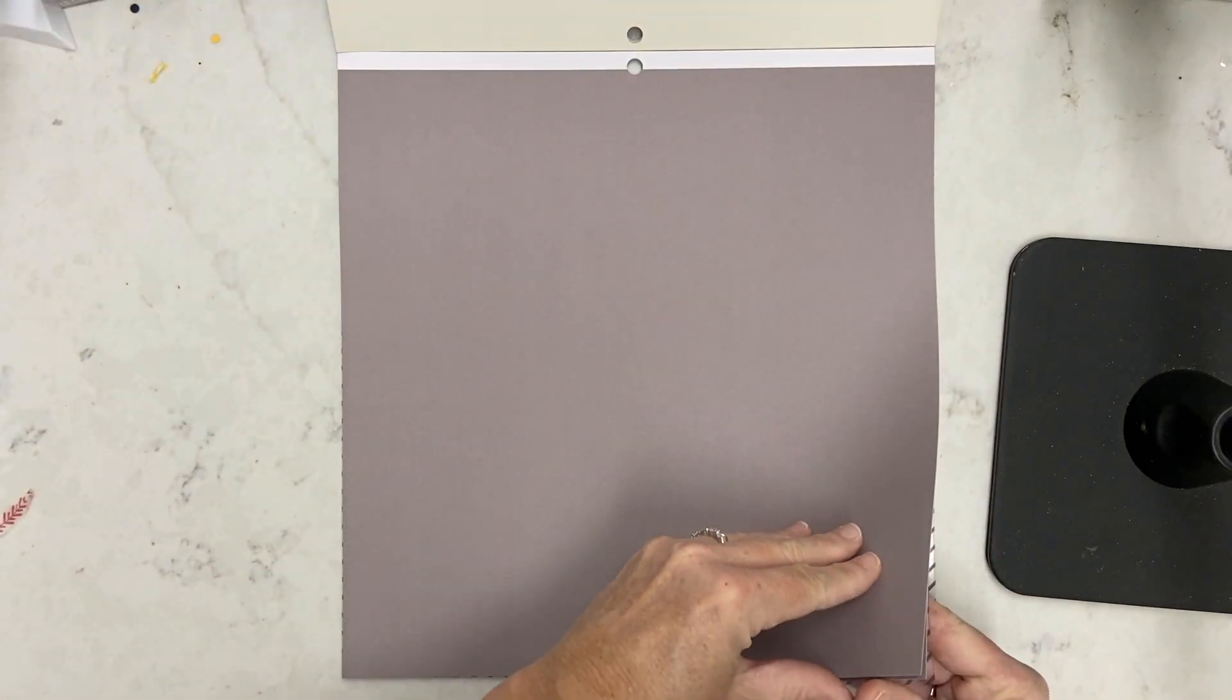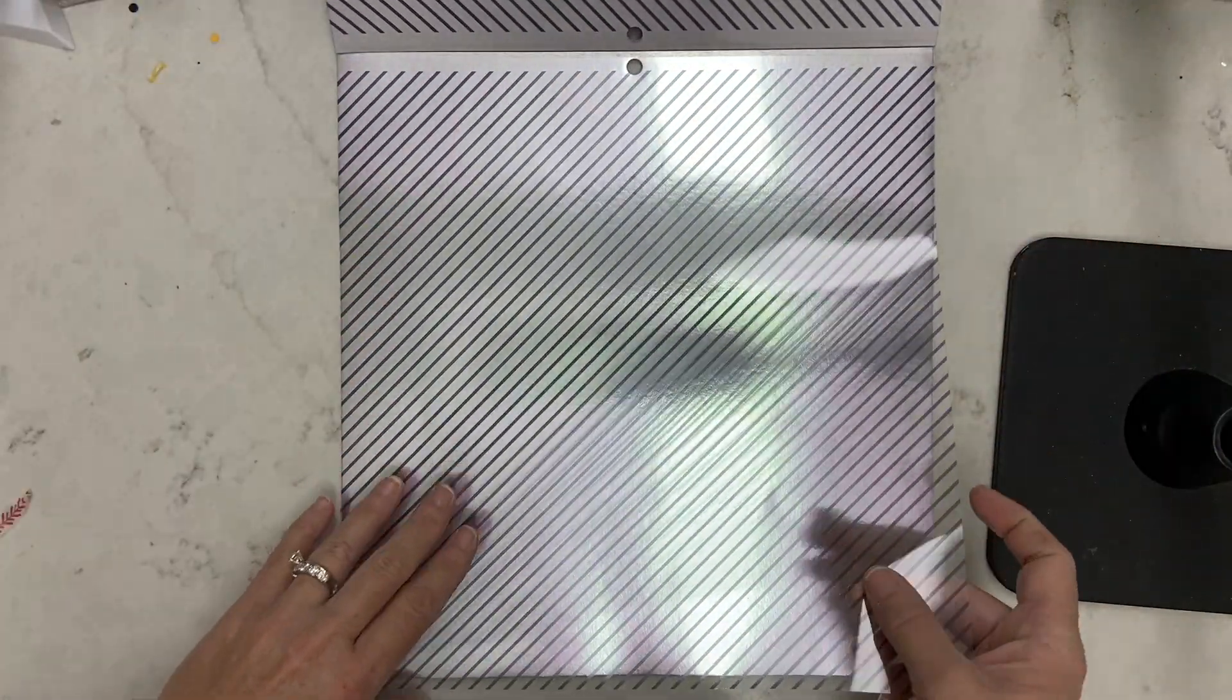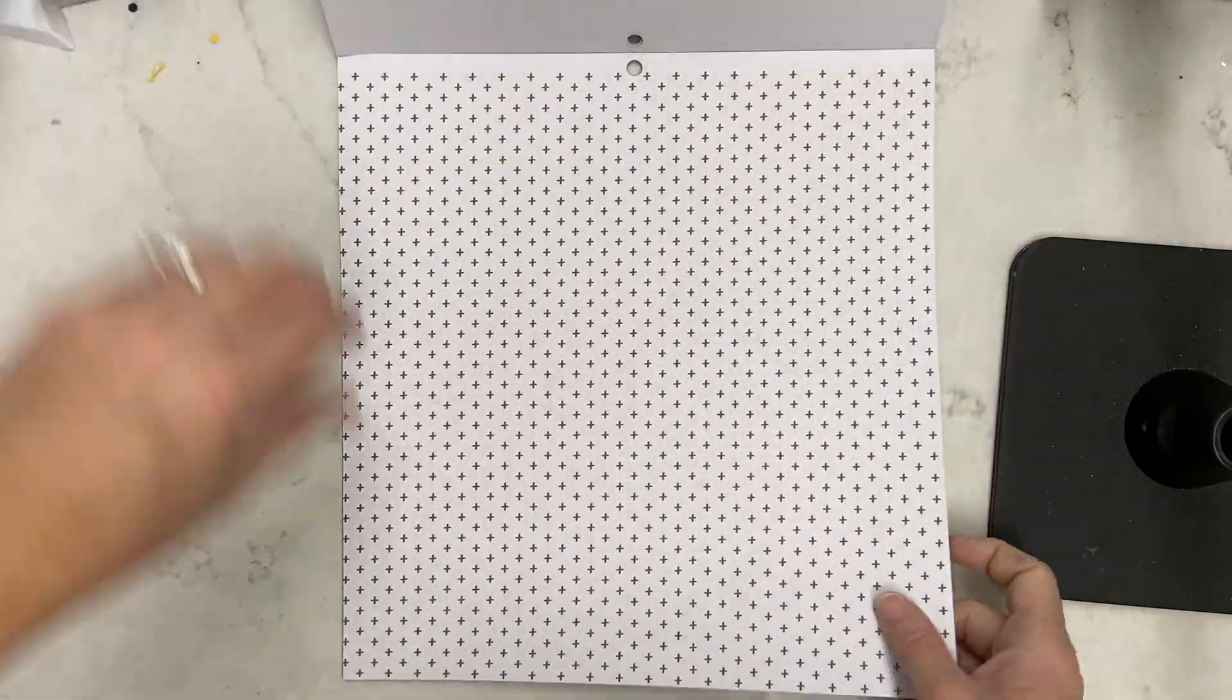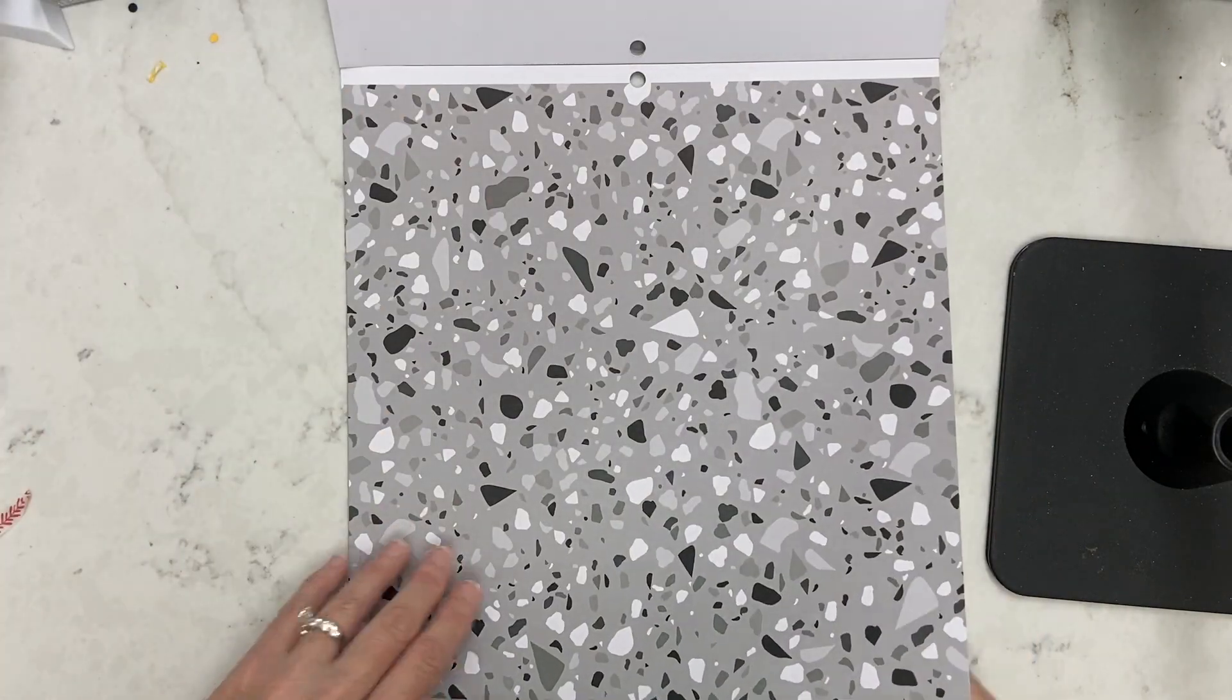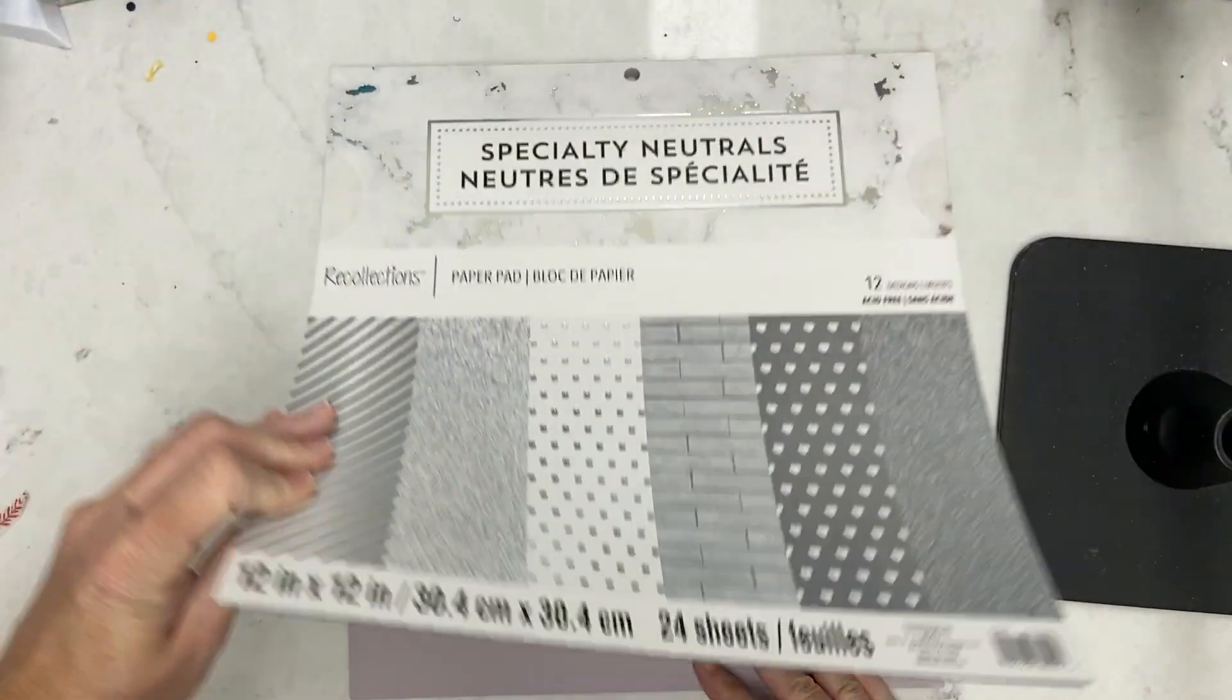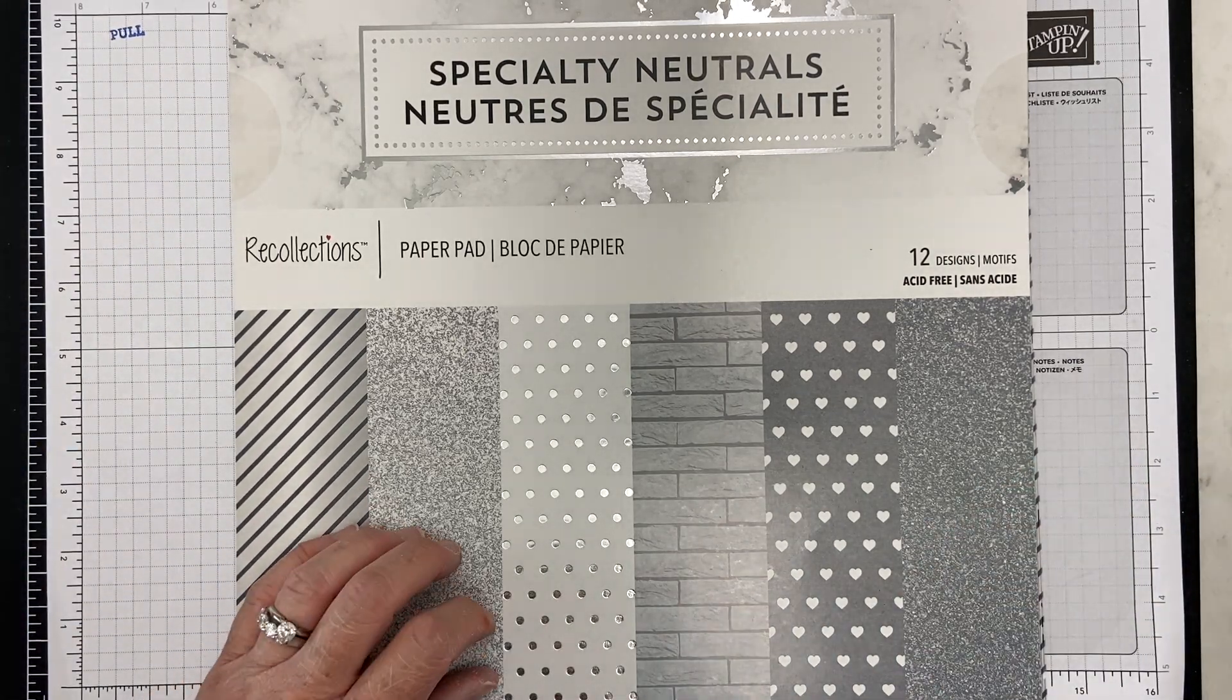There's several sheets of glitter paper, solid paper, pattern paper, foil paper, and acetate. Look at this gorgeous acetate! I need a pad of that all by itself. I'm going to be making a couple of projects today and there's this cute concrete-looking paper. That's the specialty neutrals pad you can find in your local Michael's store.